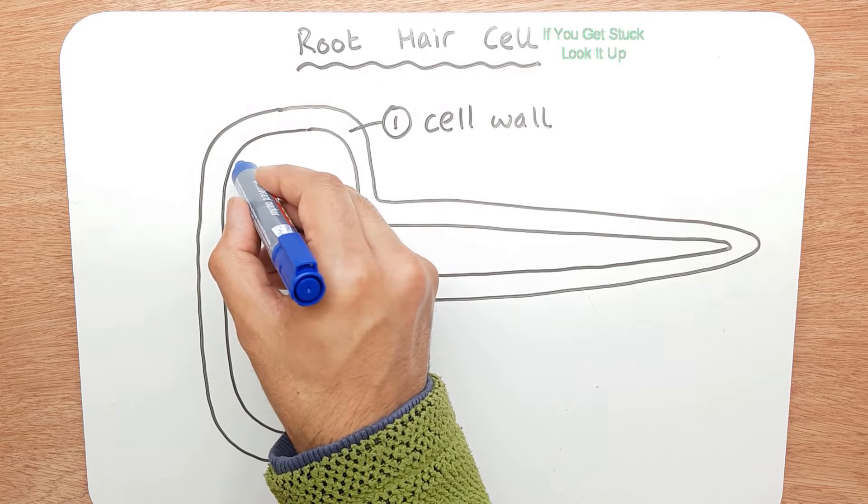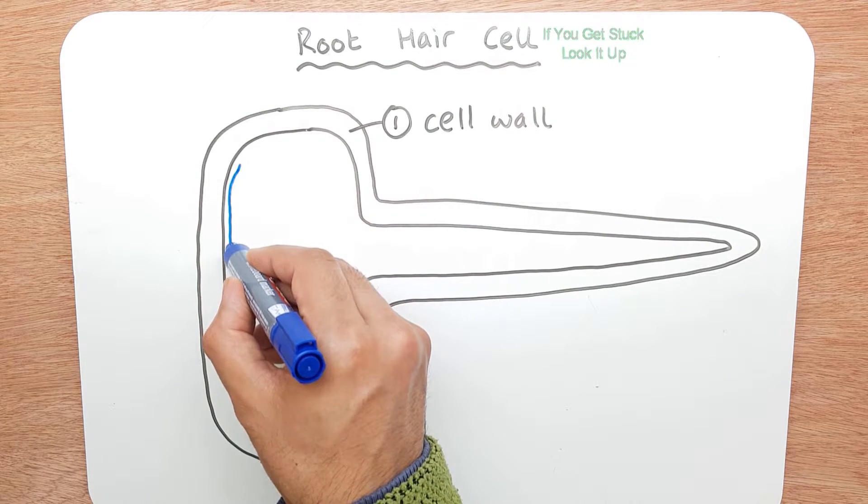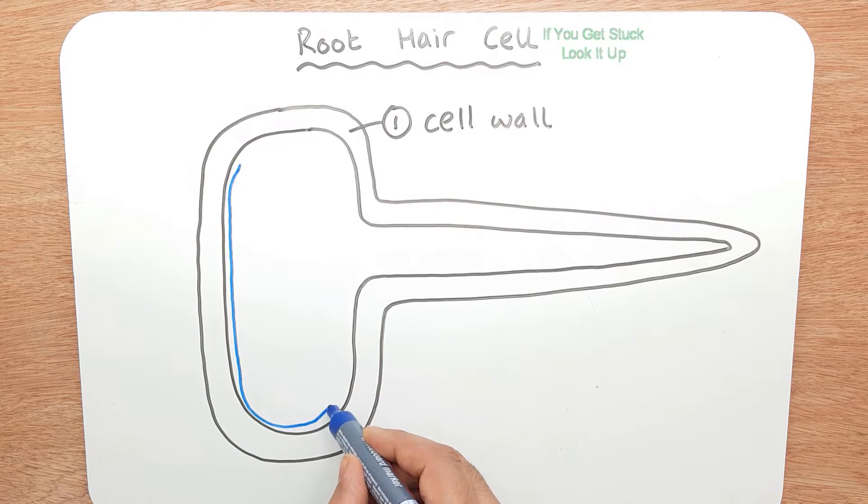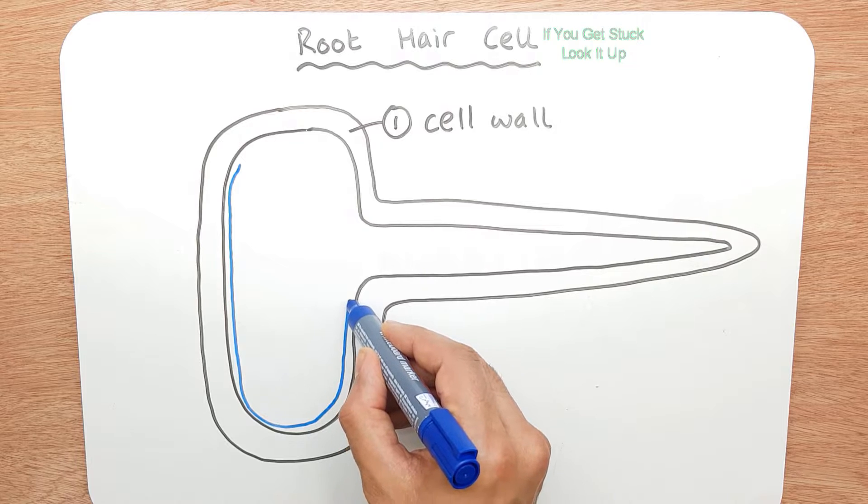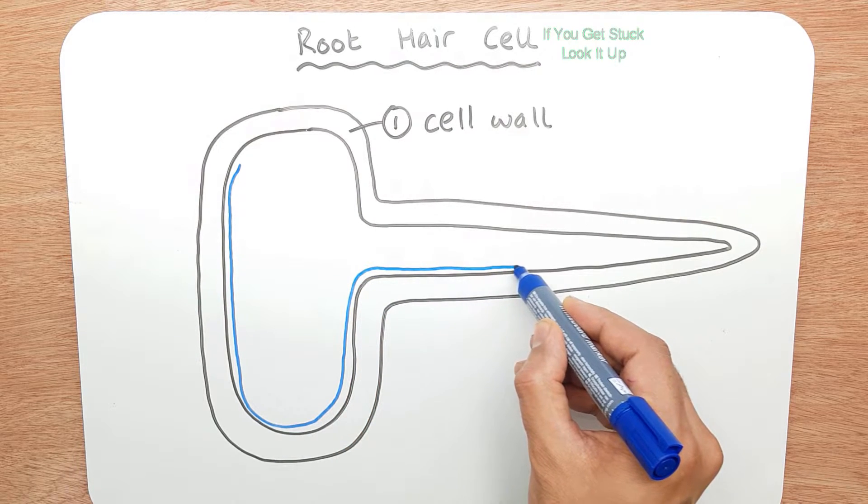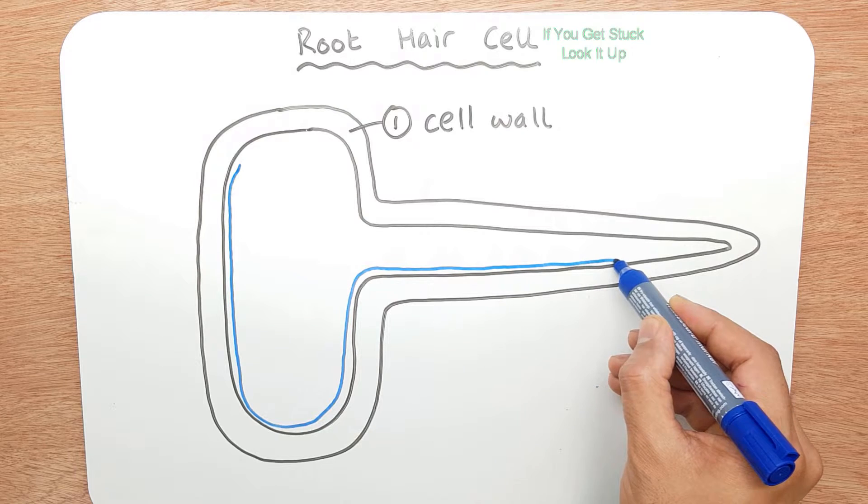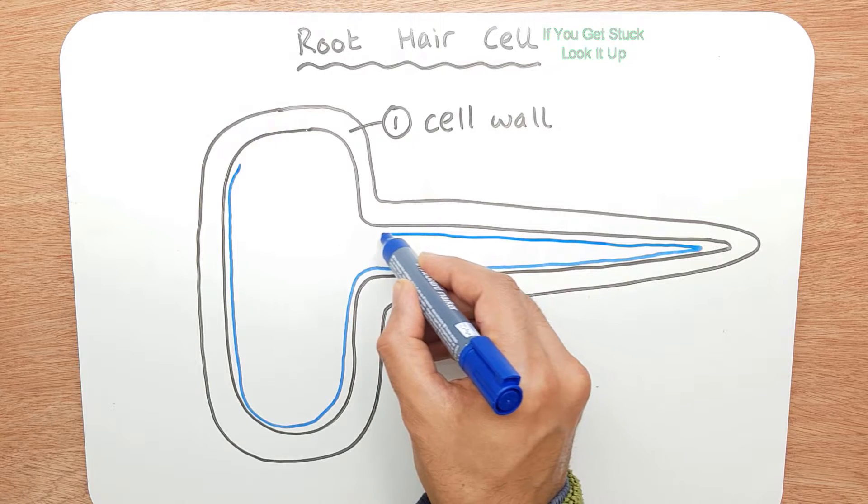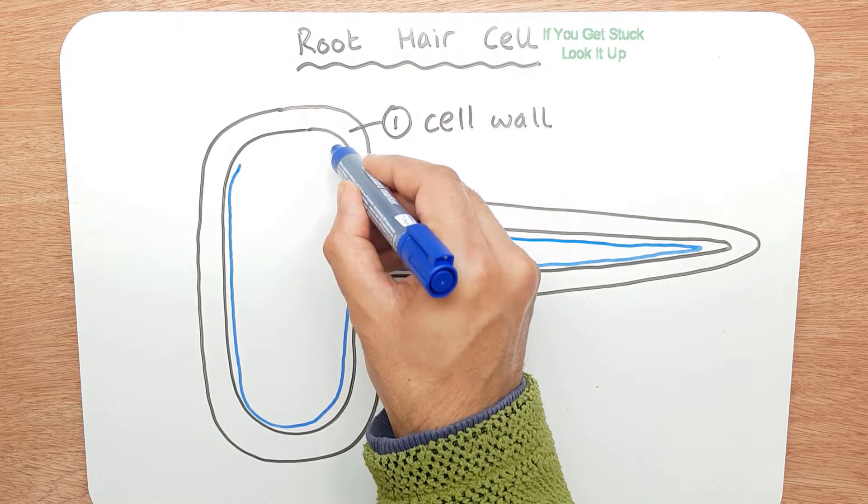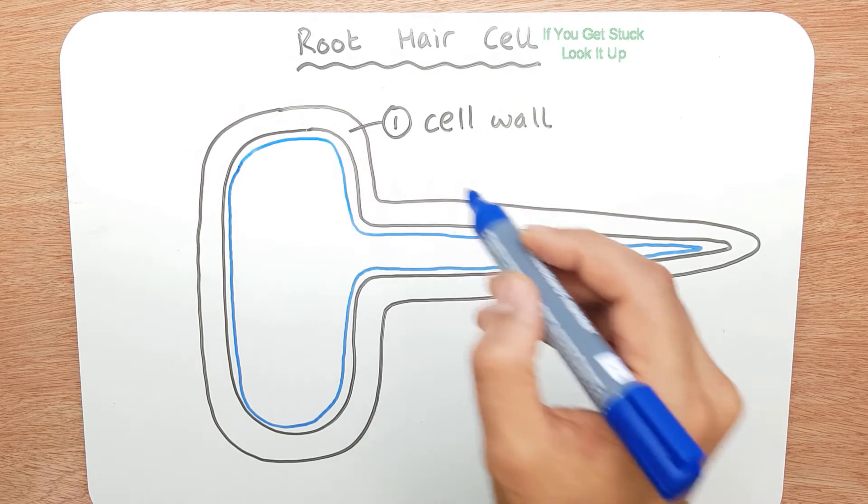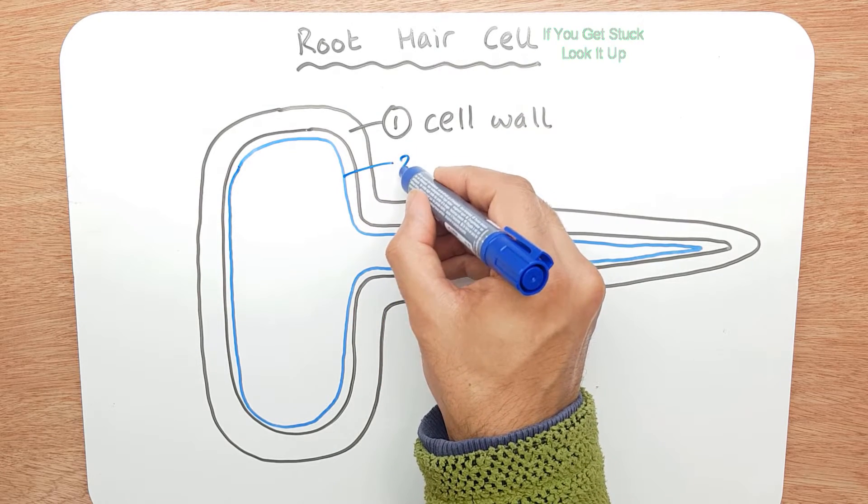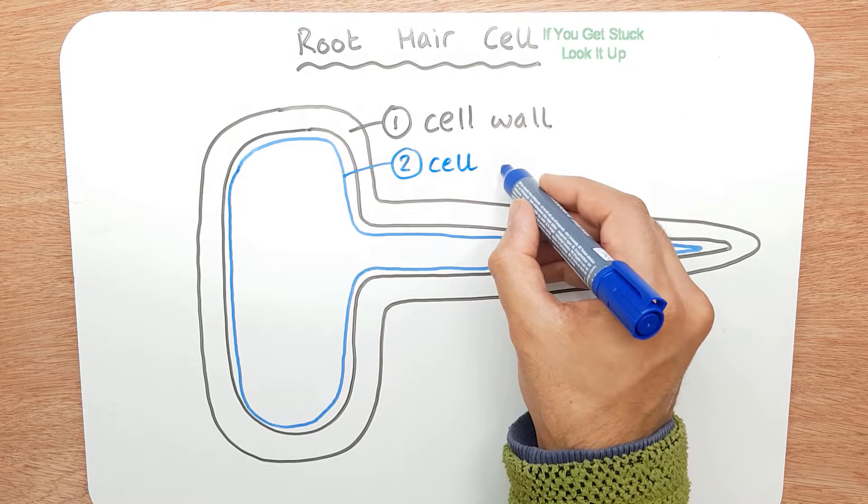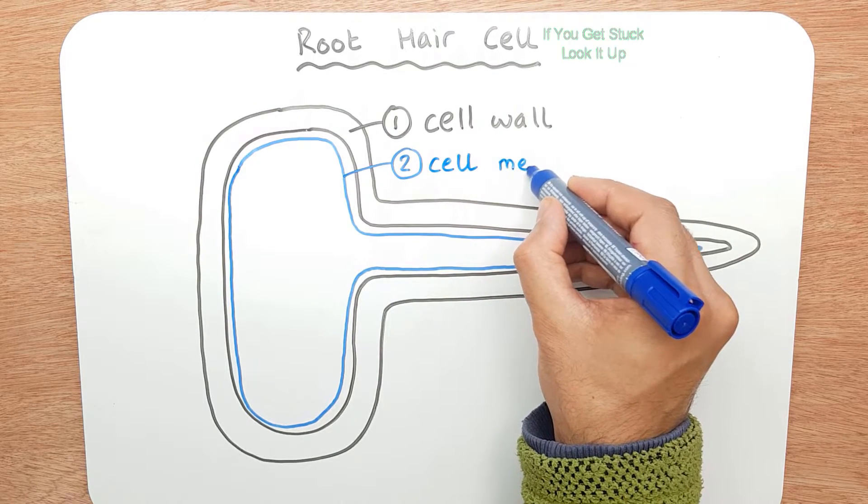Now we're going to draw the cell membrane. So carefully, we're leaving a gap so we can clearly see it. There's your cell membrane. Carefully draw it all the way around. That is your cell membrane, number two.